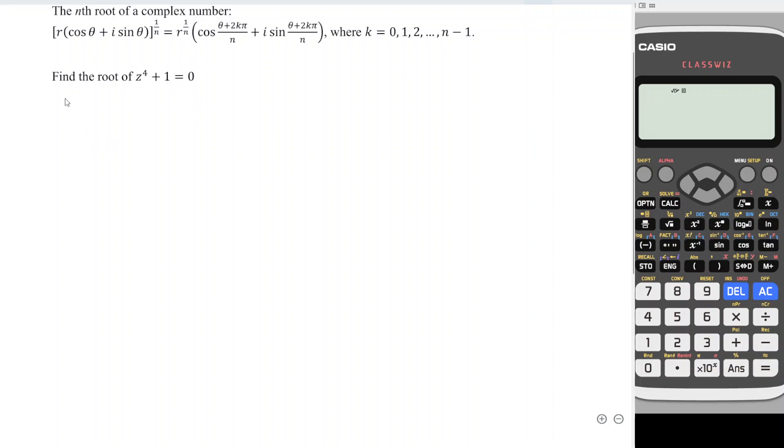So what we have to do here is rewrite the equation and we obtain z to the power of 4 is equal to negative 1.